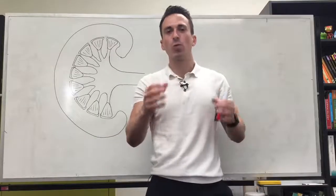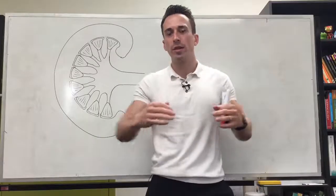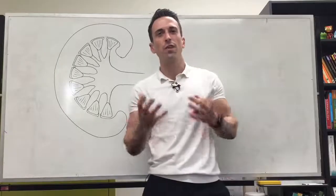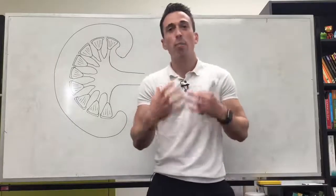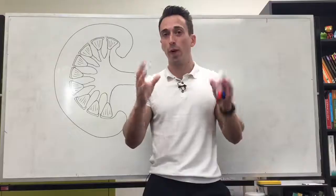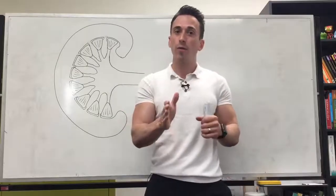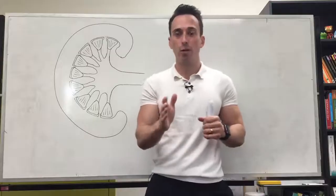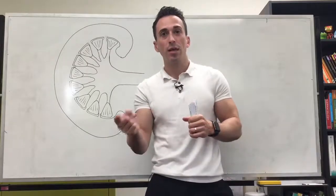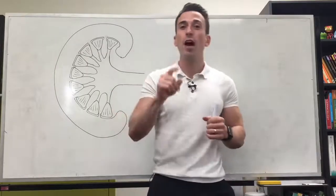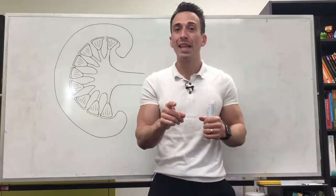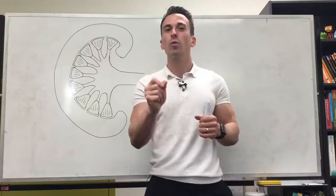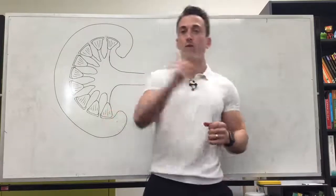Remember your kidneys — they sit retroperitoneal, that's behind your gastrointestinal tract. They weigh around about 150 grams each, so that's only about 0.4% of your entire body weight. But even though they're only 0.4% of your whole body weight, they take 20% of your cardiac output. So that means every minute, 20% of your five litres — so that's one litre — goes to your kidneys. That's a lot of blood to these tiny little organs, and the reason why is because we need to filter the blood to create urine.